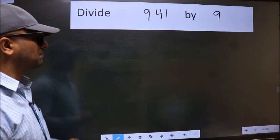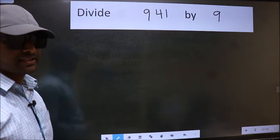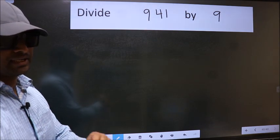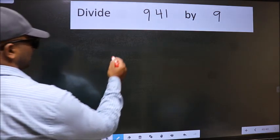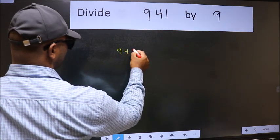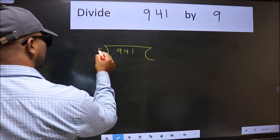Divide 9.41 by 9. To do this division, we should frame it in this way: 9.41 here and 9 here.